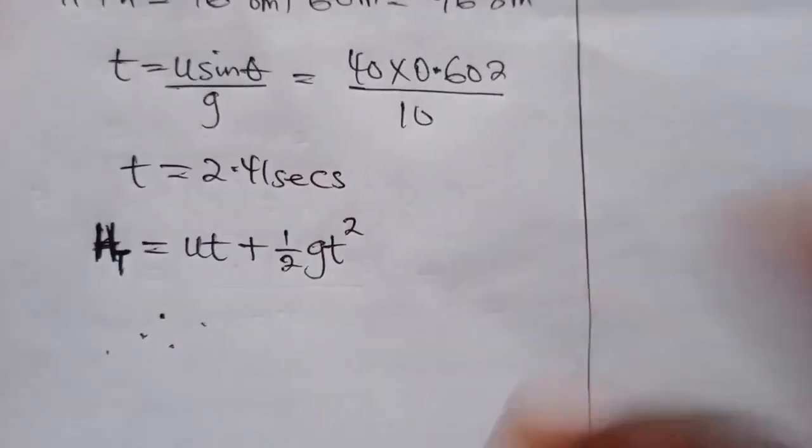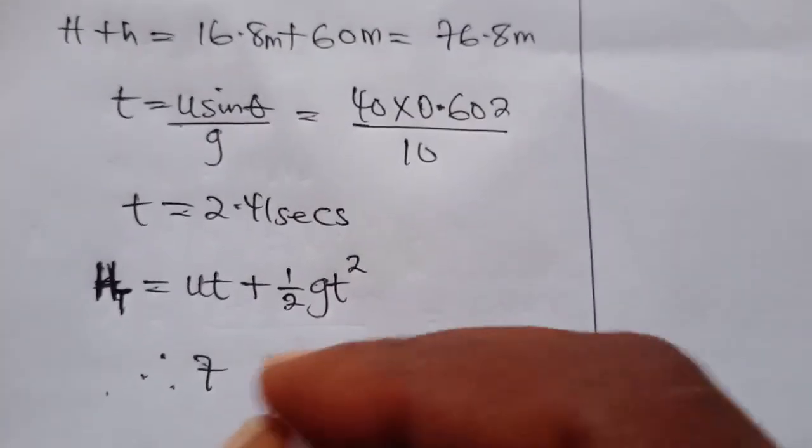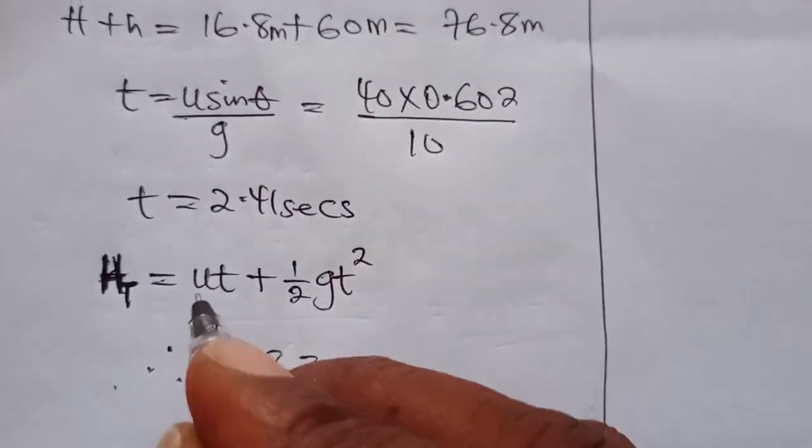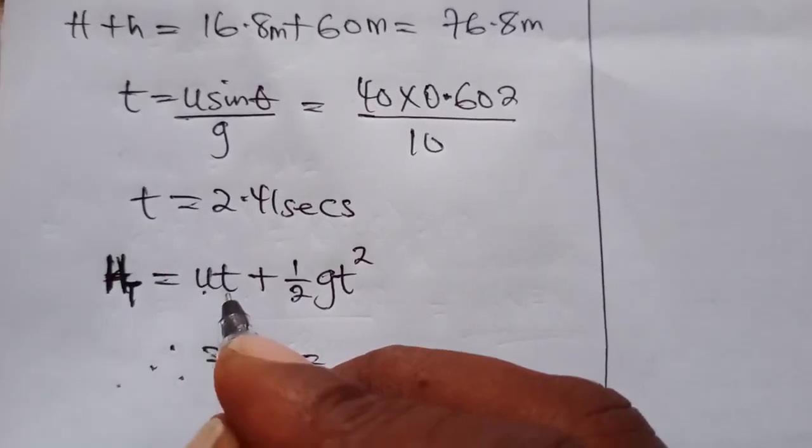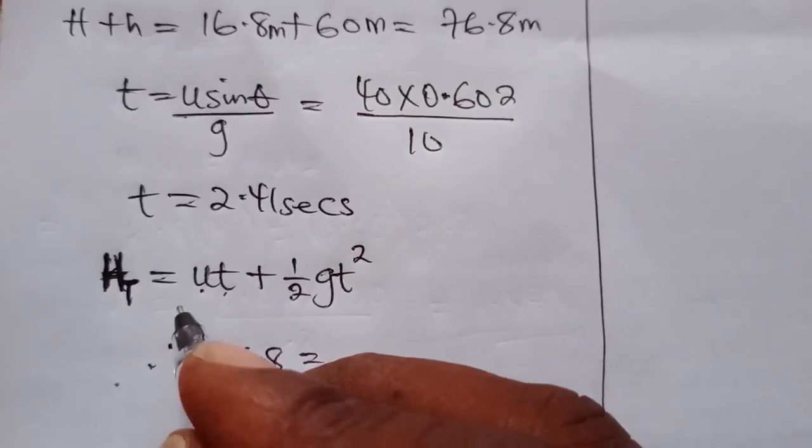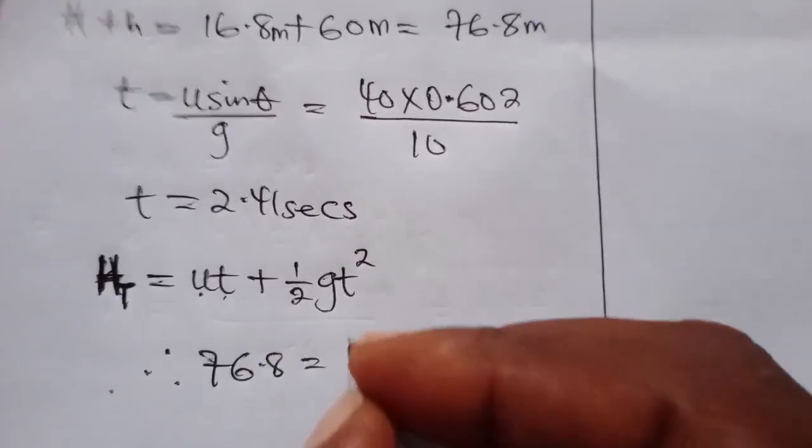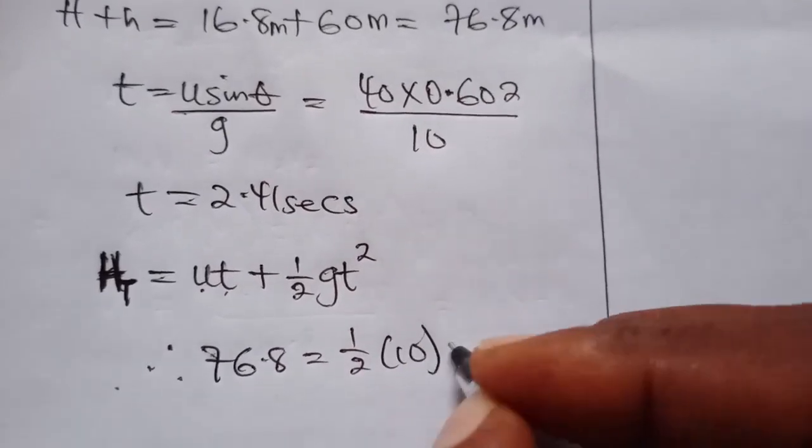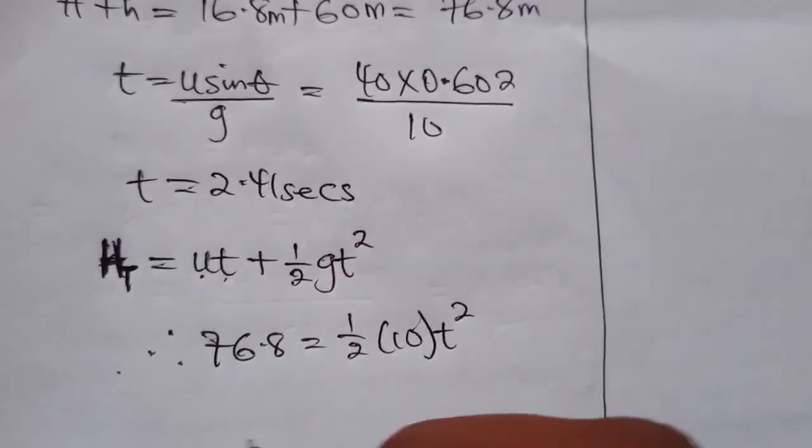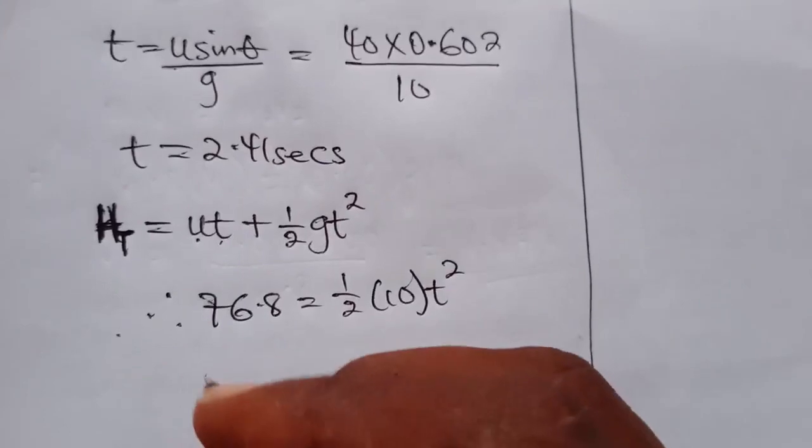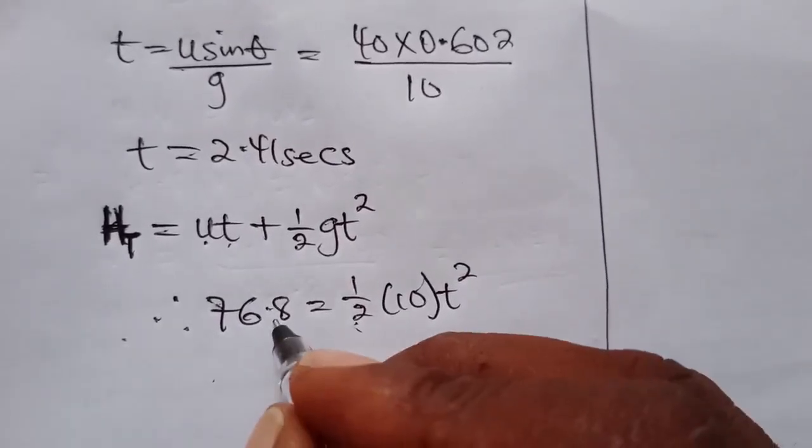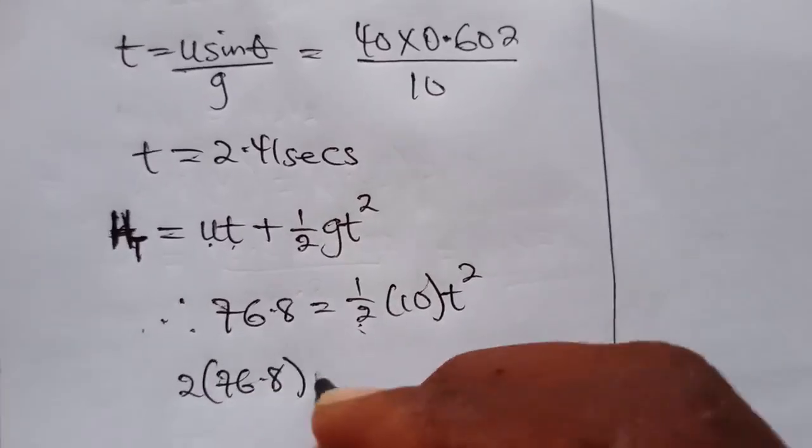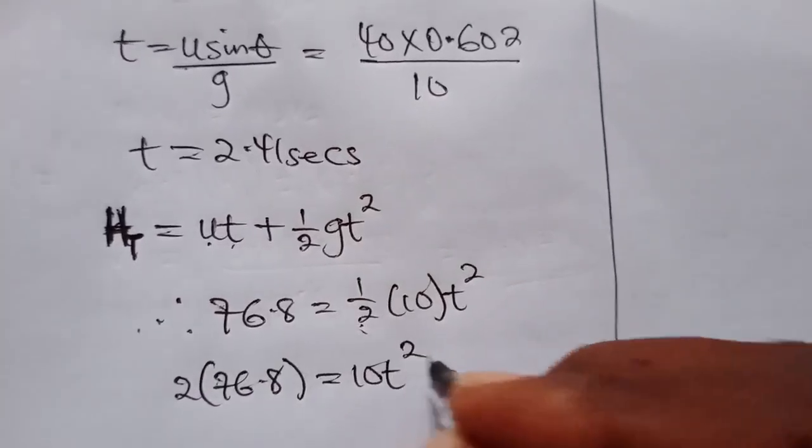So we now have 1/2 times 10 times t squared. If we cross multiply, we have 2 times 76.8 equals 10t squared. 2 times 76.8 gives us 153.6 equals 10t squared.